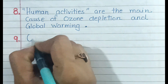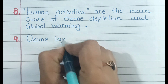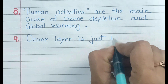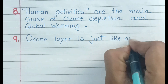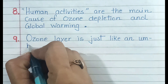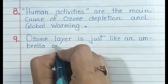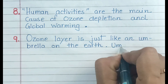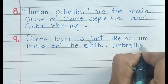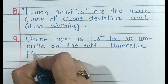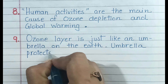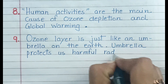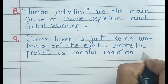Number 9: The ozone layer is just like an umbrella on the earth. Just as an umbrella protects us from the harmful radiation of the sun and rain.